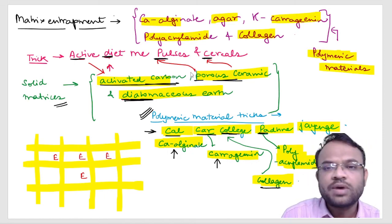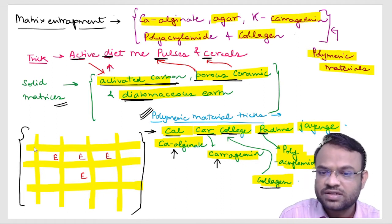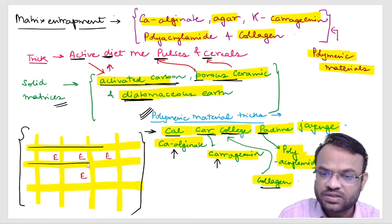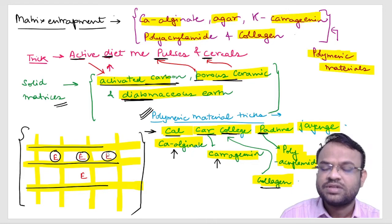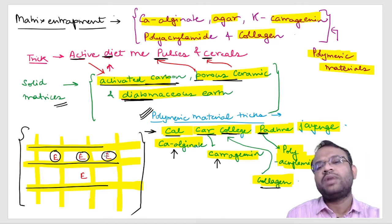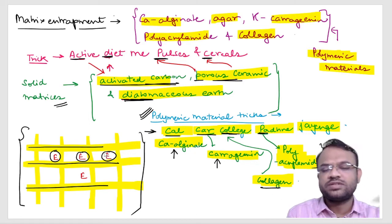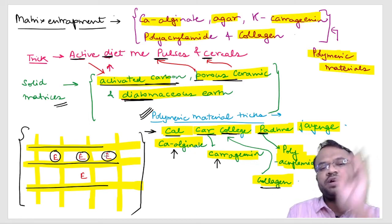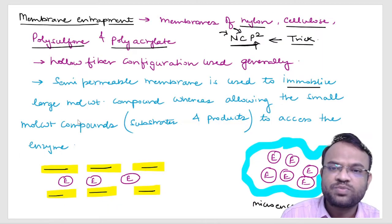Now looking at the matrix entrapment image: the highlighted structure represents the matrix, and the letter 'E' represents enzymes trapped inside. The enzyme is entrapped within the matrix and cannot come out. However, the matrix has small holes or pores through which the substrate can enter and the product can exit. This is the concept of matrix entrapment.